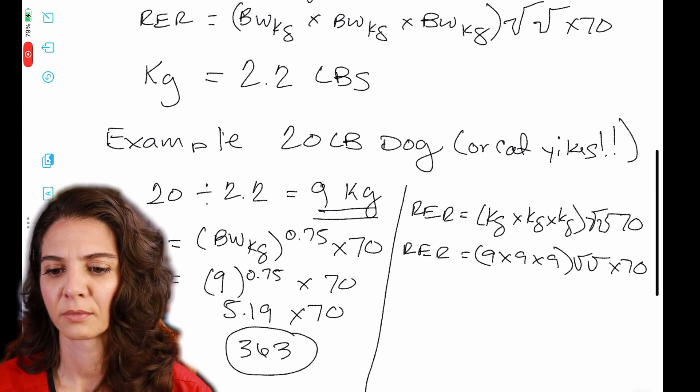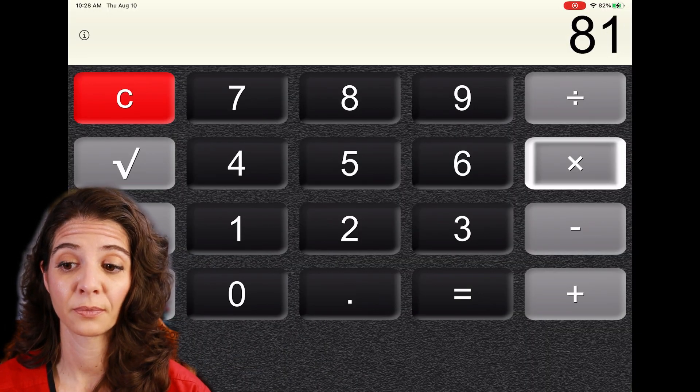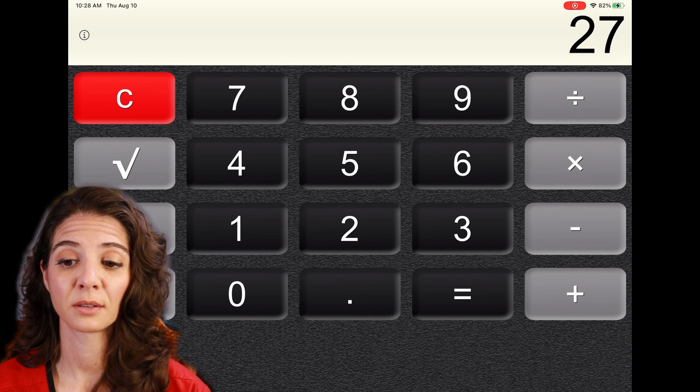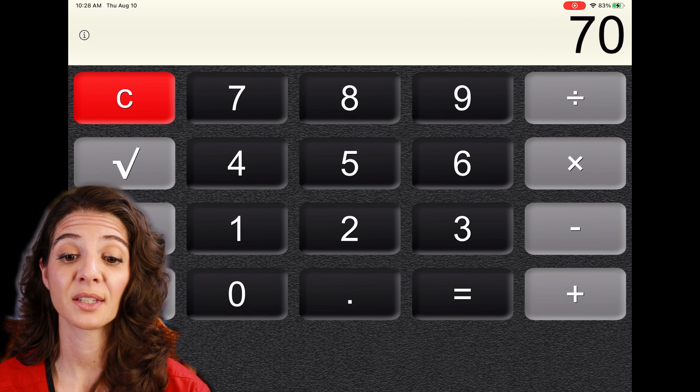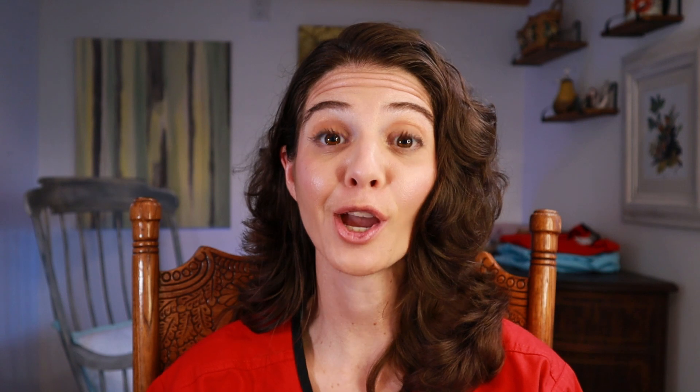So that's going to be nine times nine times nine, square root button, square root button, 5.19. You can see it's the same times seventy, which gives you 363. So there you go.